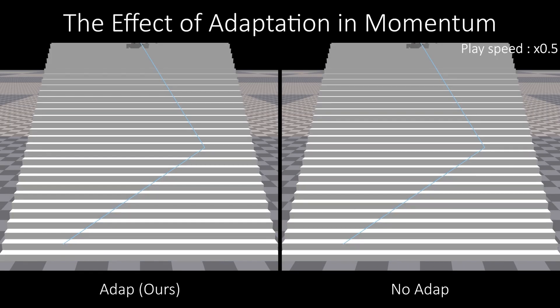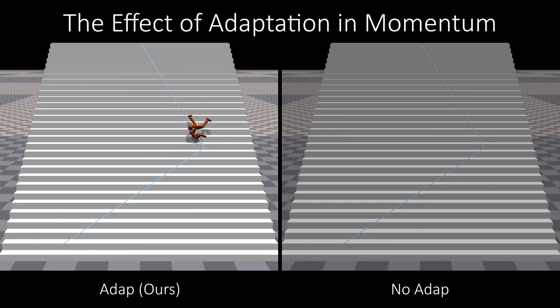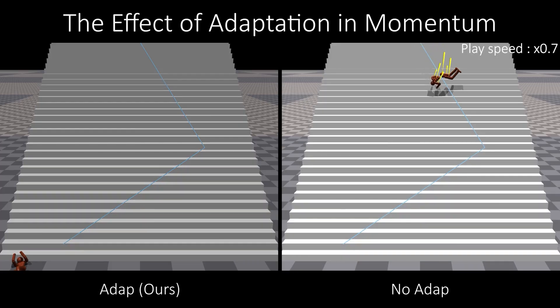In this experiment, two methods are compared: our method, which applies perturbation forces adapted to the actor's momentum, and NOADAP, which applies artificial forces freely without adaptation. Our method ensures physical realism by effectively managing perturbation forces, while NOADAP often produces unrealistic floating motions.